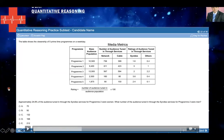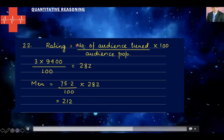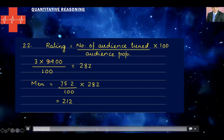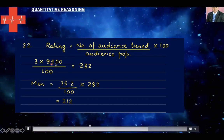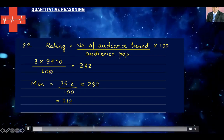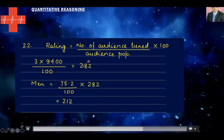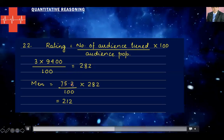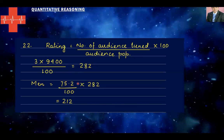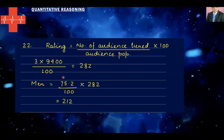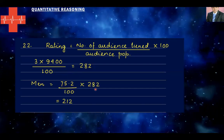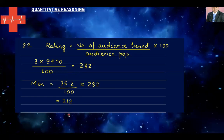Here comes the detailed solution. The rating formula is number of audience tuned in × 100 divided by audience population. Using rating 3 and audience population 9400 divided by 100, that gives you 282. You are asked to calculate the number of men. Since 24.8% were women, subtract 24.8 from 100 to get 75.2% as men. So 75.2% of 282 gives the men population, which comes out to be 212.